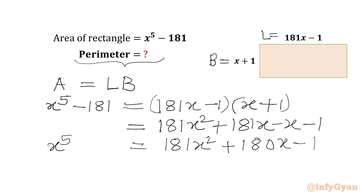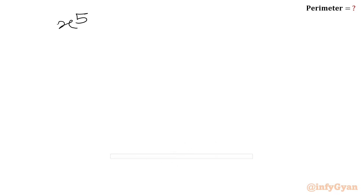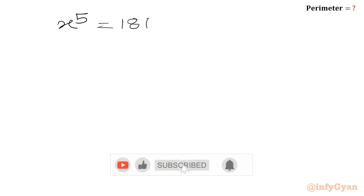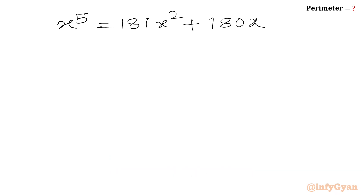The LHS is x to the power 5 minus 181. Now we will take the minus 181 to the RHS. We will write x to the power 5 equals 181x squared plus 180x, and 181 minus 1 gives plus 180. So: x to the power 5 equals 181x squared plus 180x plus 180.